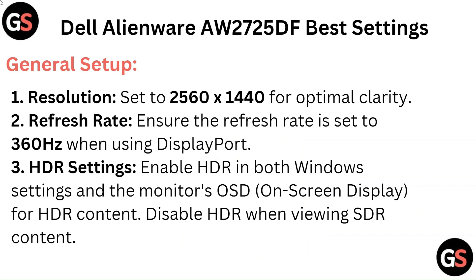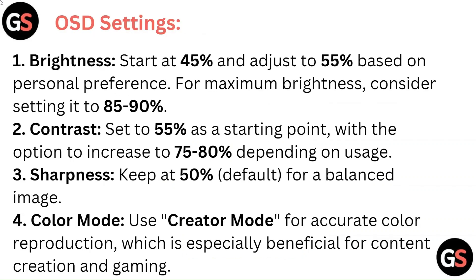Disable HDR when viewing SDR content. OSD Settings — Brightness: Start at 45% and adjust to 55% based on personal preference. For maximum brightness, consider setting it to 85-90%.